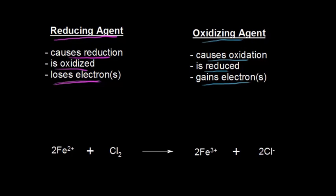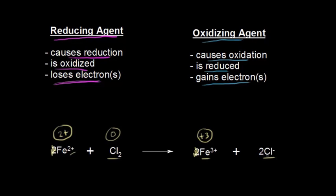Let's do one more example and figure out the oxidizing and reducing agents. Ignoring coefficients: for a monatomic ion, the oxidation state equals the charge on that ion, so Fe²⁺ has an oxidation state of +2. The atoms in the Cl₂ molecule are in their elemental state, so their oxidation state is 0. Fe³⁺ has an oxidation state of +3, and the chloride anion Cl⁻ has an oxidation state of -1.